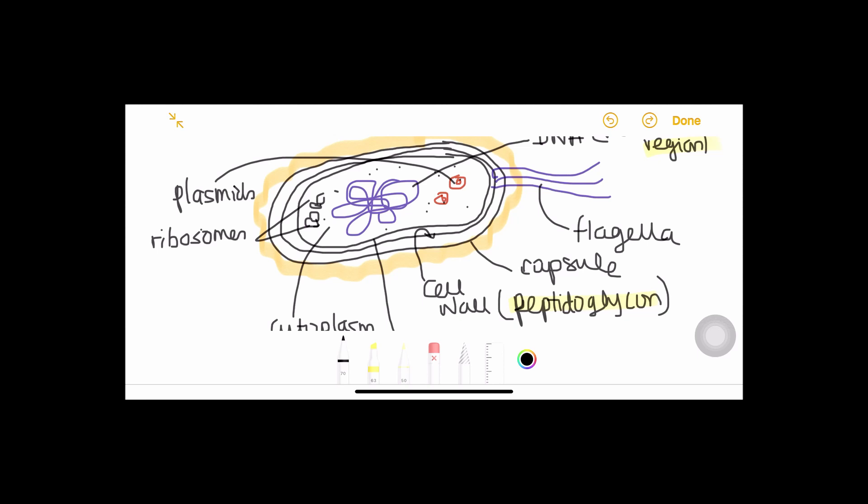Eukaryotes and prokaryotes have a feature in common, have one more feature in common apart from the cytoplasm and stuff. They have ribosomes, not very similar to the eukaryotic ribosome, but they do carry ribosomes. And that is pretty much it about bacteria.